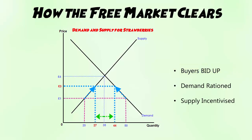This is what we call demand rationing. Demand gets rationed to those who can afford it. This is one of the functions of price, along with incentive and signalling, which we'll look at in a separate video.